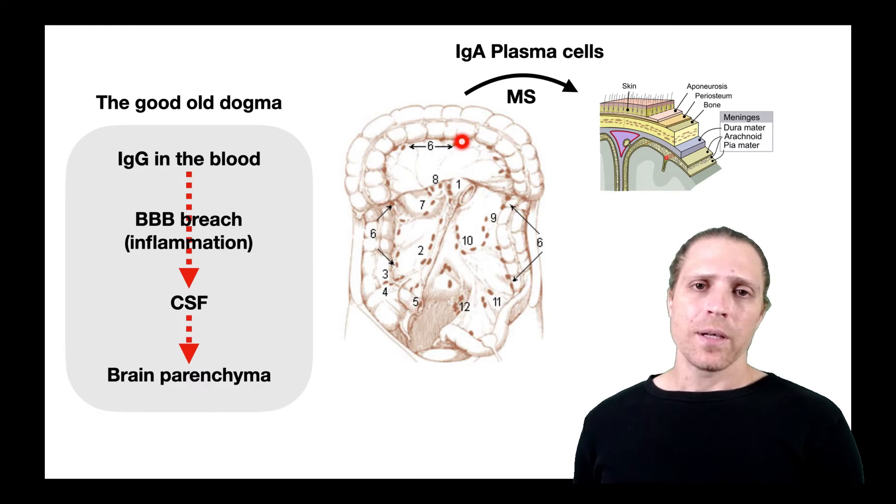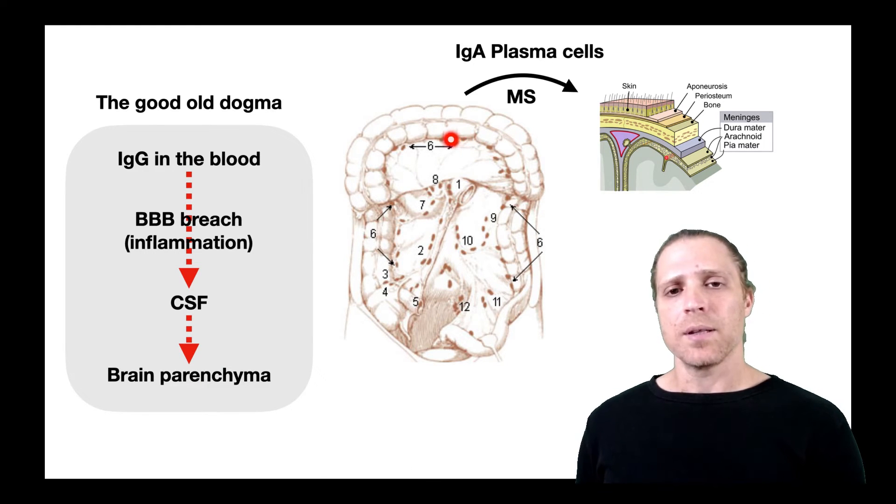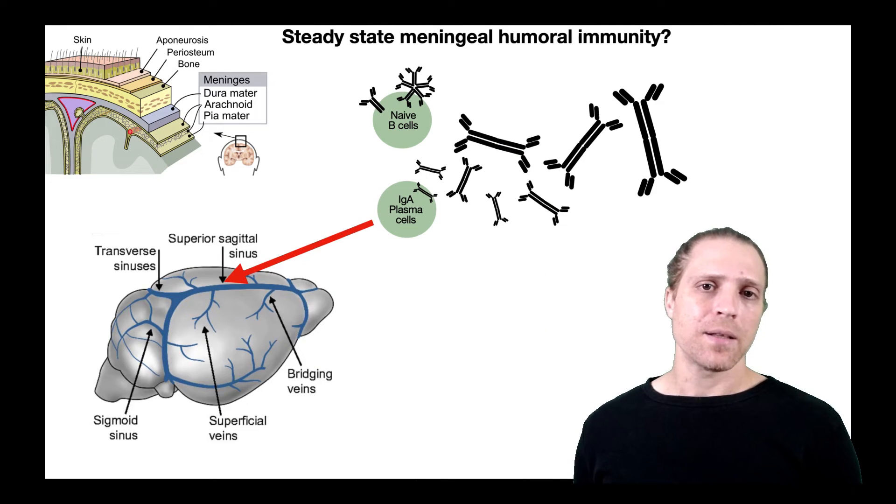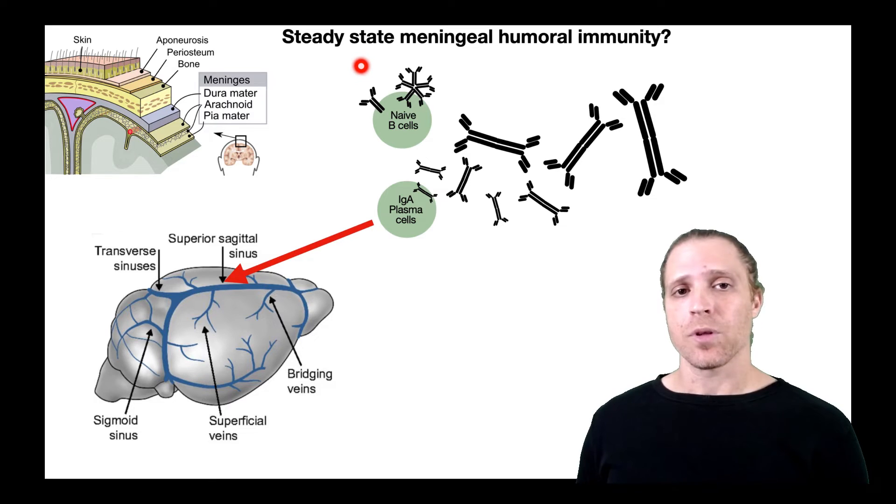However, in a recent paper, it was described that in multiple sclerosis patients there is a transfer of IgA-producing plasma cells into the meninges. However, the current study aimed to study the role of meningeal humoral immunity under steady state, so rather not in a context of a pathogen infection.